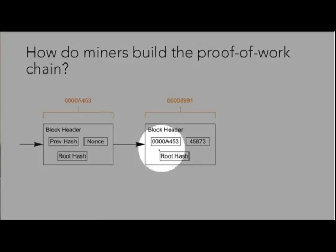That just means it took the miner 45,873 tries to get a hash of the entire block header with enough leading zeros — which is four in this example. The proof of work hash of the block header on the right side starts with four zeros. Now the way that nonces work in Bitcoin is that the nonce is actually the miner's wallet address. The miner just keeps creating random wallet addresses, and when they find one that gets the correct number of leading zeros for the block header, they can post that block header and claim the block reward — called the coinbase transaction — plus the fees. So that's how the proof-of-work chain is built.